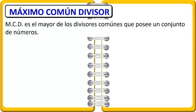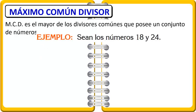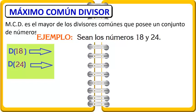No entiendo, profe. Veamos un ejemplo: sean los números 18 y 24, vamos a hallar el máximo común divisor. Mira acá, tenemos el número 18 y el número 24, vamos a determinar los divisores de 18 y los divisores de 24.